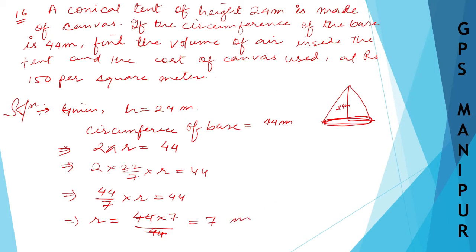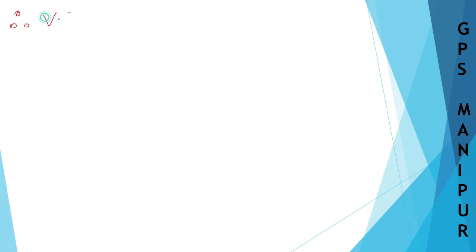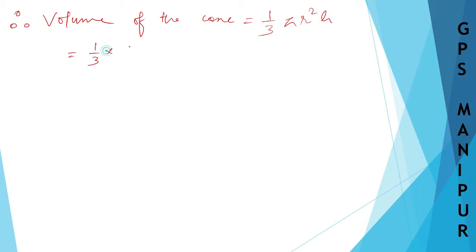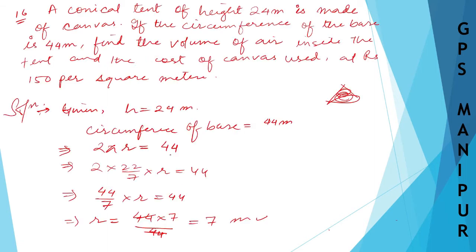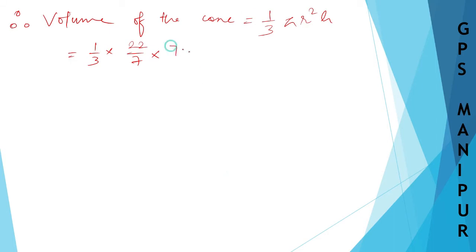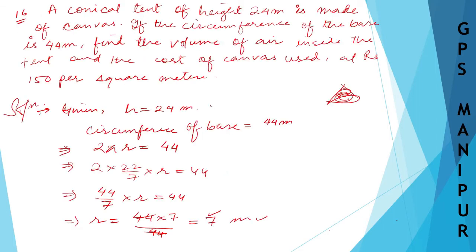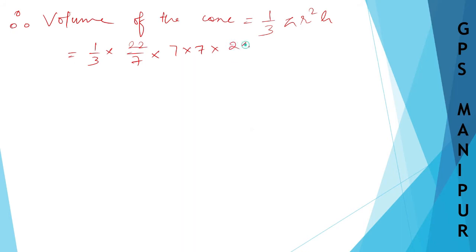The question asks to find the volume of the air inside the tent, which means we need to find the volume of the cone. Volume of the cone = (1/3) × π × r² × h = (1/3) × (22/7) × 7 × 7 × 24.